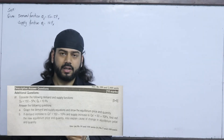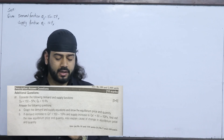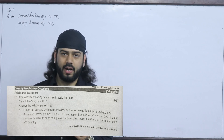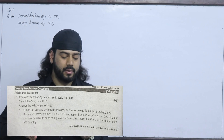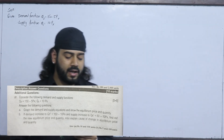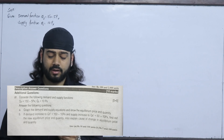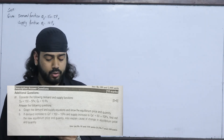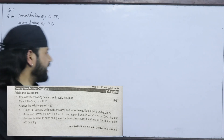Consider the following demand and supply functions: QD = 152 - 5PX and QS = 10PX. First, graph the demand and supply equations and show the equilibrium price and quantity. Then, demand increases to QD' = 150 - 10PX and supply increases to QS'. Find out the new equilibrium price and quantity and explain the cause of change. We will solve this equation algebraically and mathematically.